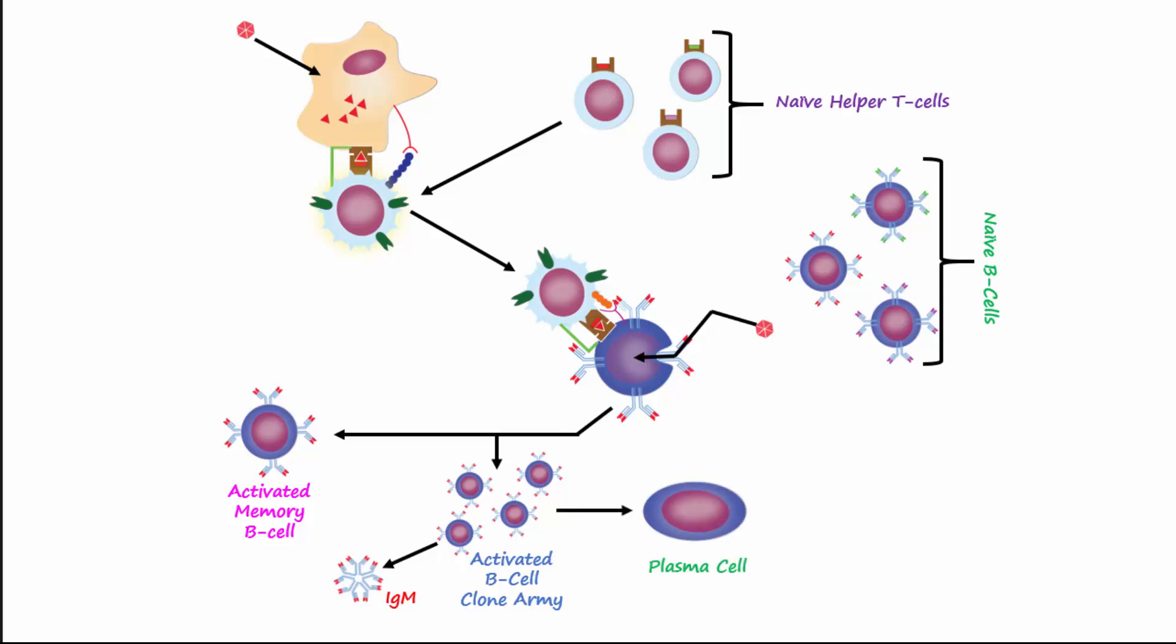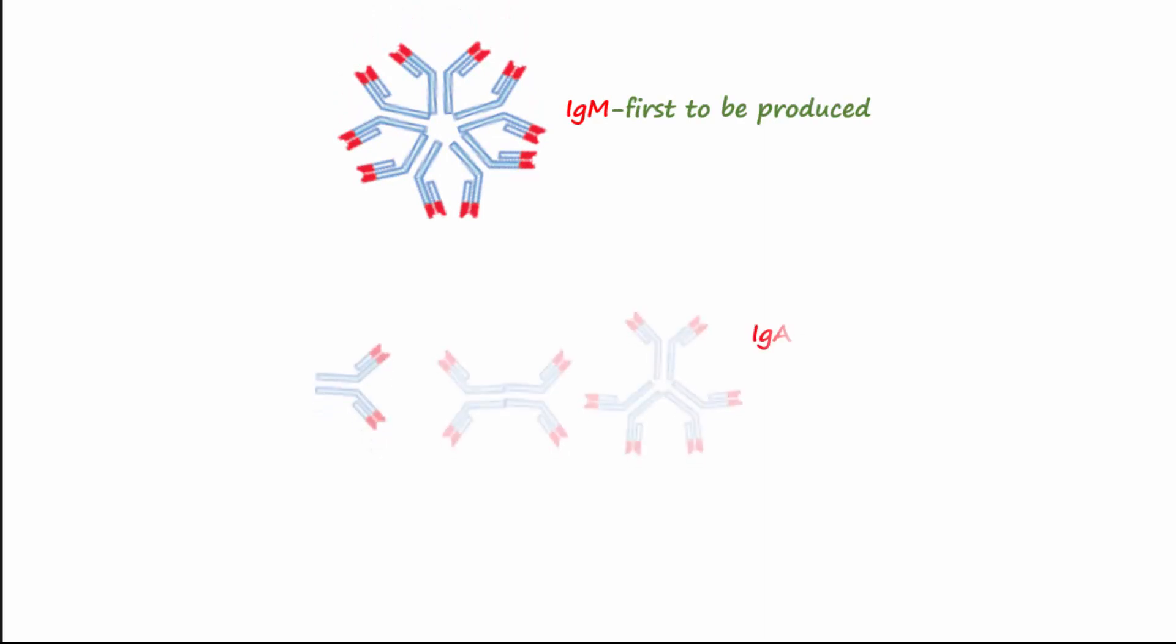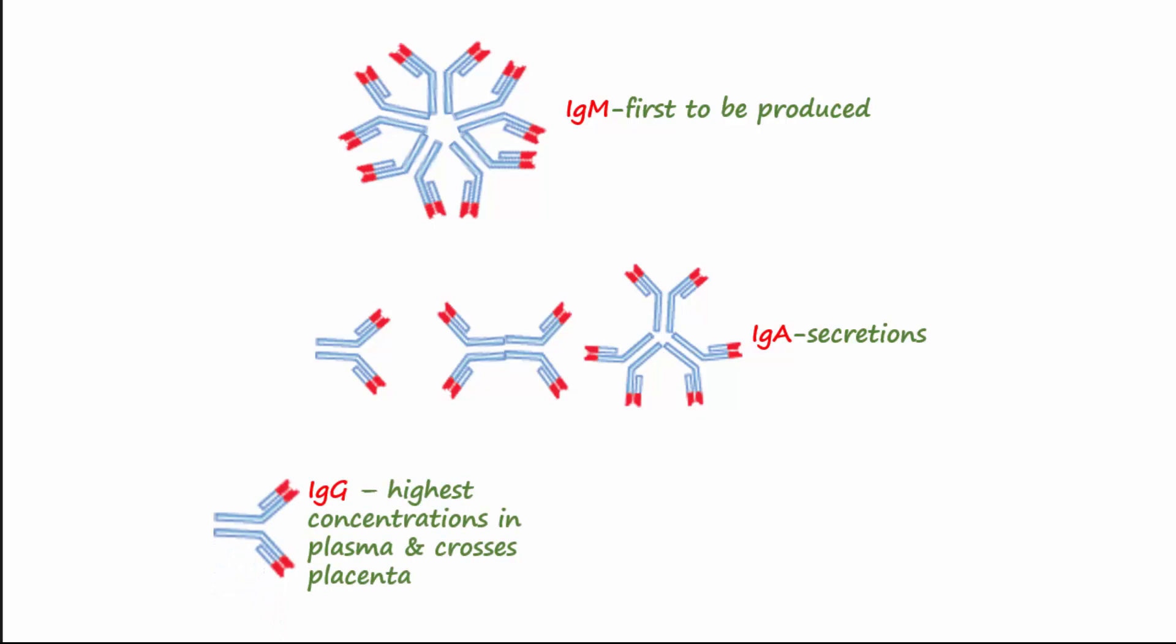The plasma cells secrete three different classes of antibodies with specific functions and include IgA, IgG, and IgE. IgM is the first antibody to be produced upon activation of the humoral response. IgA is secreted from mucosal epithelia to combat microbes in the gastrointestinal and respiratory tracts.